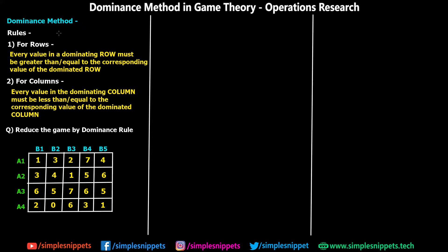There are two main rules when it comes to dominance method. The first rule is for rows: every value in the dominating row must be greater than or equal to the corresponding value of the dominated row. The second rule is for columns: every value in the dominating column must be less than or equal to the corresponding value of the dominated column. This dominance method helps us reduce the payoff matrix into a lesser number of rows and columns so that the problems get simplified.